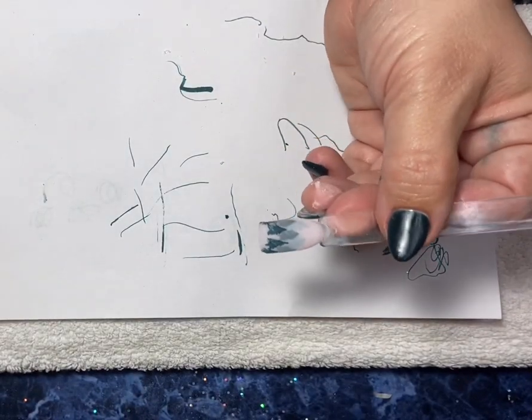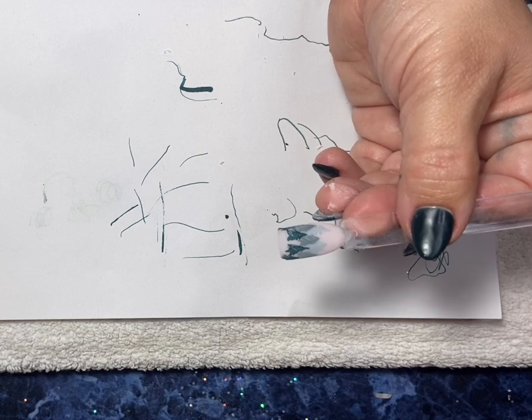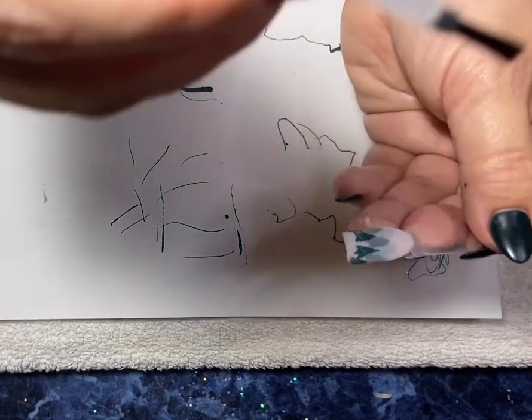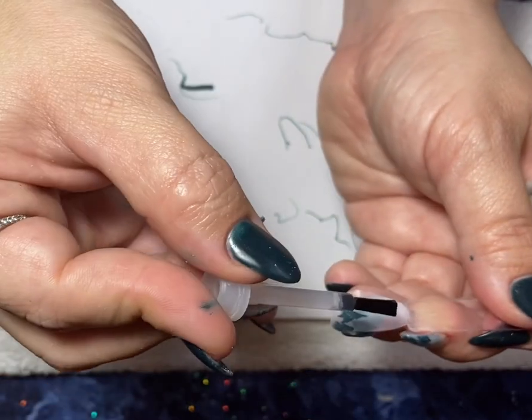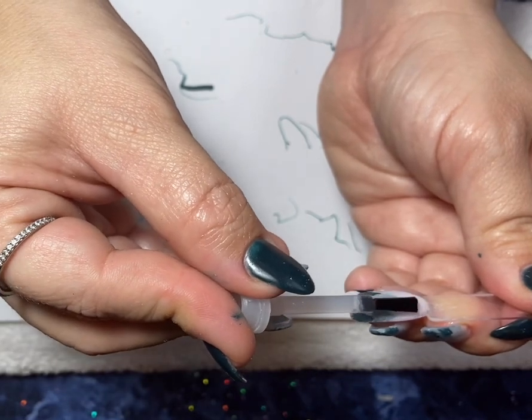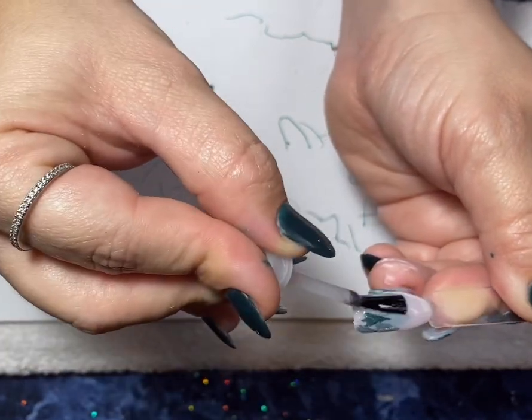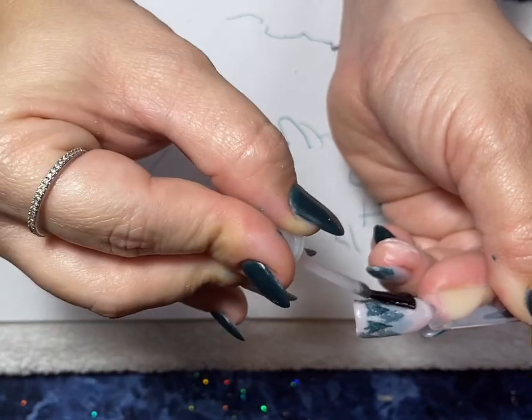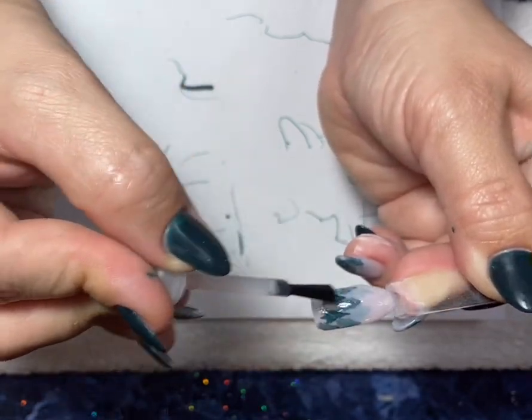We're going to dip this again so go ahead and bring out your base and put that evenly on the nail and we'll dip it into Erica and do one more layer of trees.